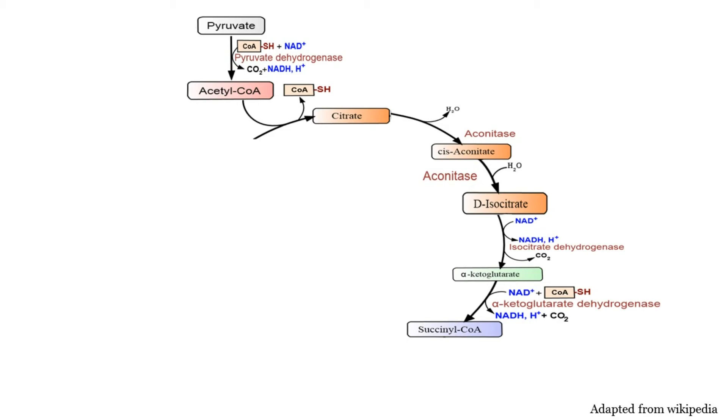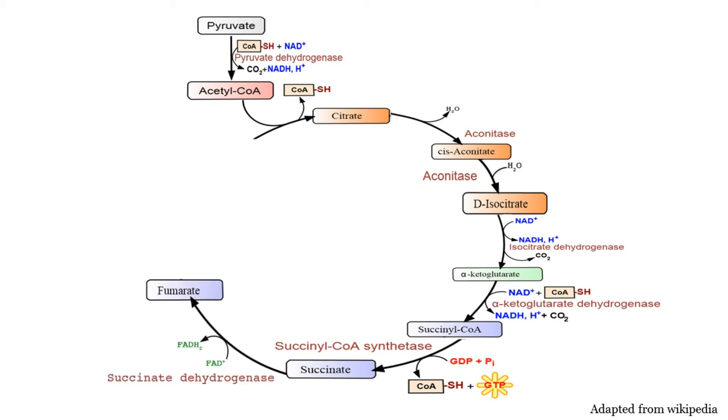The next step is going to succinate, which produces GTP and is facilitated by succinyl-CoA synthetase. Followed by that, you make fumarate, which produces FADH2. It is facilitated by succinate dehydrogenase.